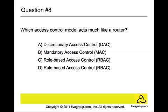Question number eight: which access control model acts much like a router? If you know what a router does, this should be easy. The answer is rule-based access control. This type of control further defines specific conditions for access to a requested object. Like routers, rule-based systems function based on rules. For example, they can permit access for an account or group to a network connection only at certain hours of the day or days of the week, creating a timeline for when a subject can access an object.